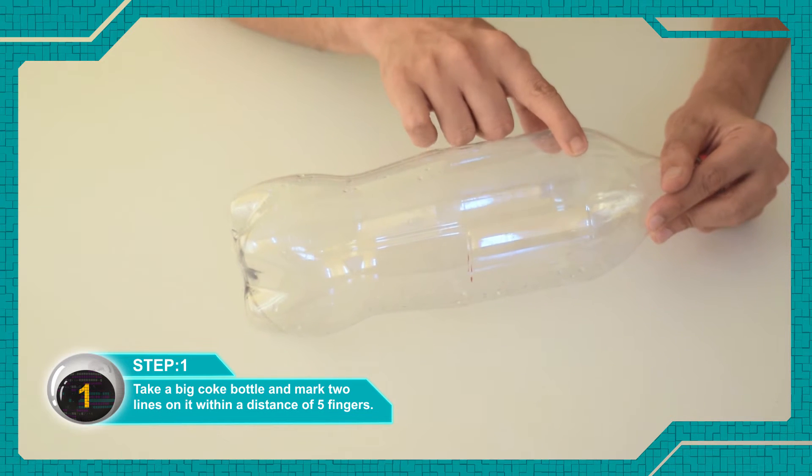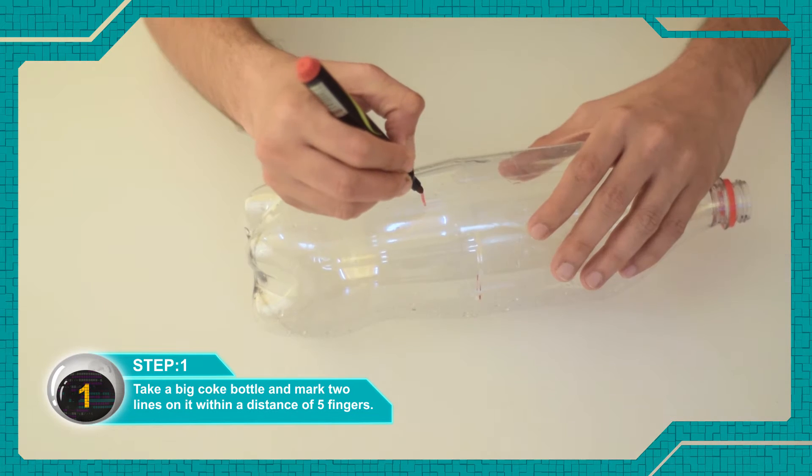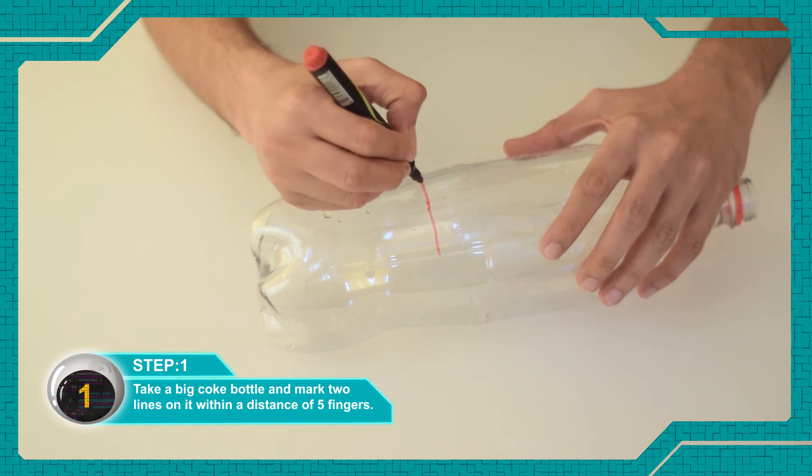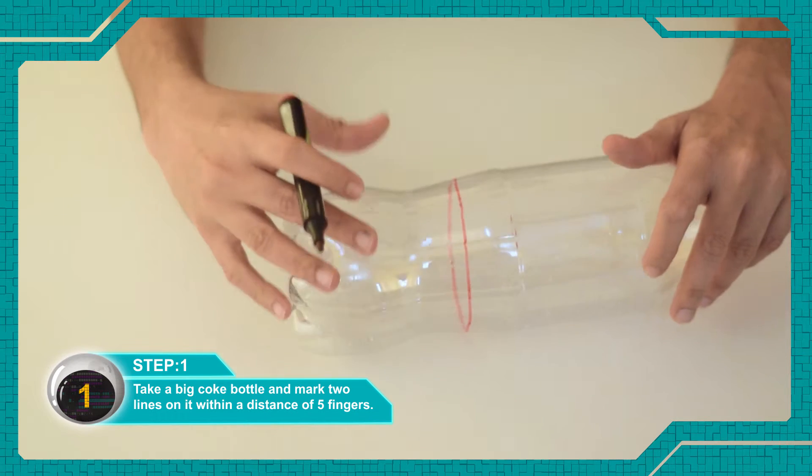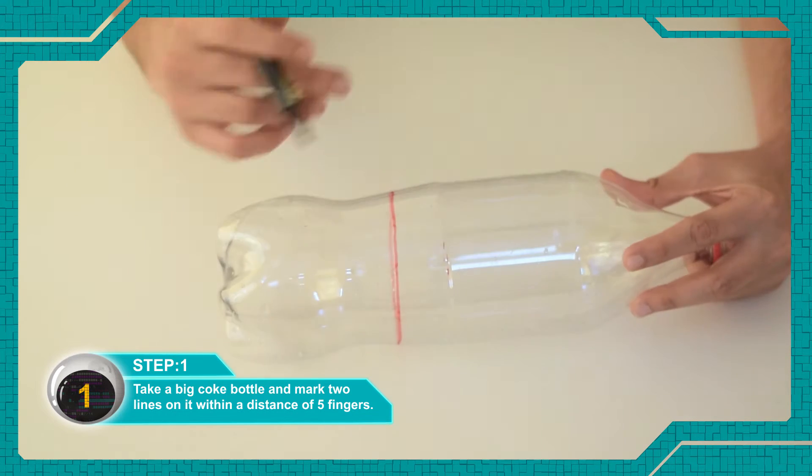Take one big coke bottle and make two lines within a distance of five fingers.